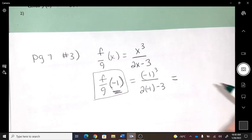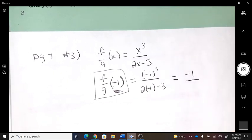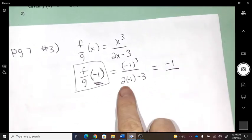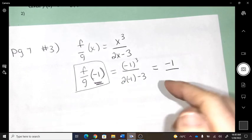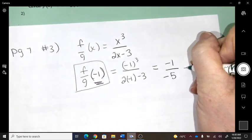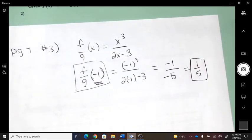Okay, so negative 1 cubed, negative 1. This would be negative 2 subtract 3. So that's what they're looking for. They're just saying, okay, do the operation, but plug in a negative 1.